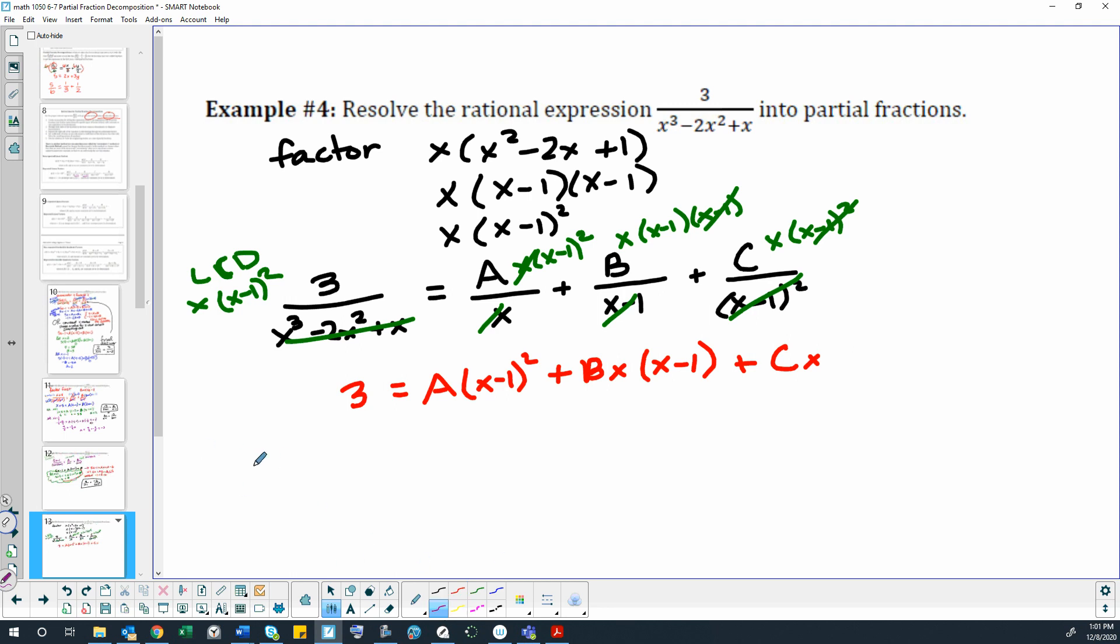So I am left with 3 equals A times x minus 1 squared plus B times x times x minus 1 plus C times x. I'm going to use my convenient x method. So I'm going to let x equals 0. That would give me 3 equals A times 0 minus 1 squared plus B times 0 times negative 1 plus C times 0. So that gives me 3 equals 1A, and then we have 0 and 0. So A equals 3.